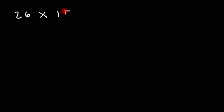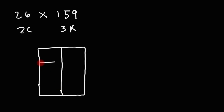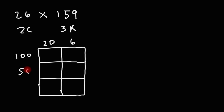Feel free to try this one: multiply 26 by 159. Now, 26 is a two-digit number so we could use two columns, and 159 is a three-digit number so we'll use three rows. You can also do three columns and two rows — your answer will still be the same. 26 is 20 plus 6, and 159 is 100 plus 50 plus 9.